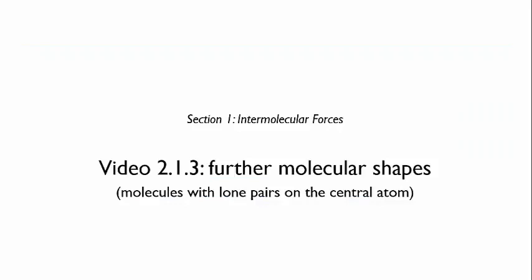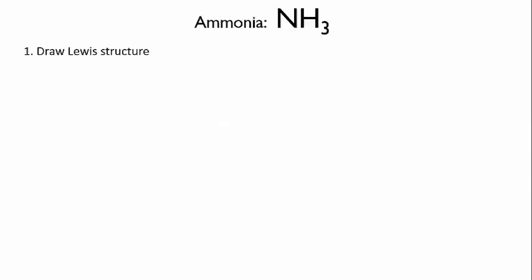In the last video, I introduced you to three basic molecular shapes predicted by VSEPR theory: linear, trigonal planar, and tetrahedral shapes. In this video, we're going to look at some variations on those shapes. So let's start with ammonia.